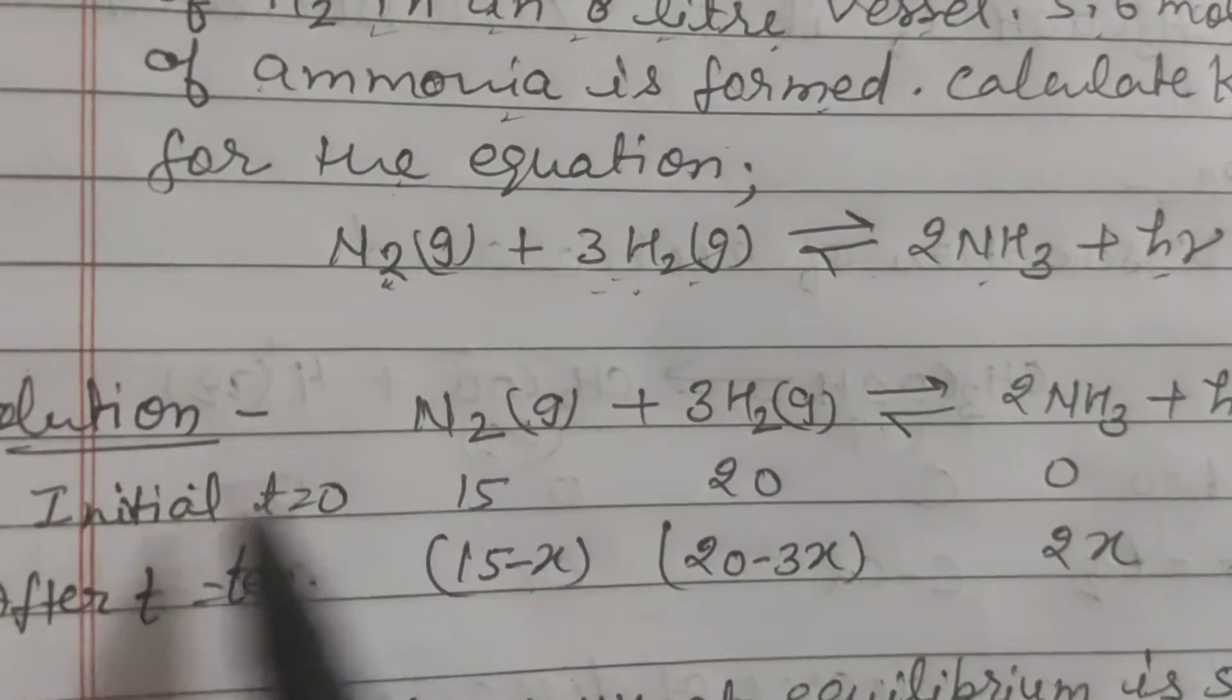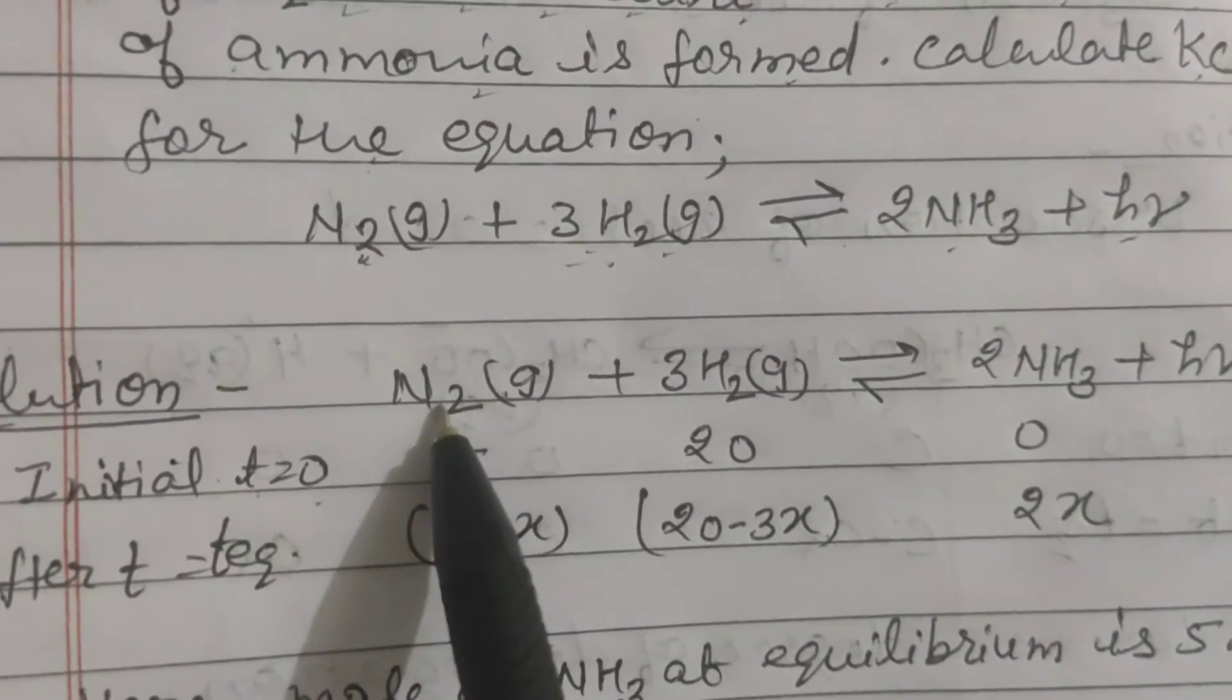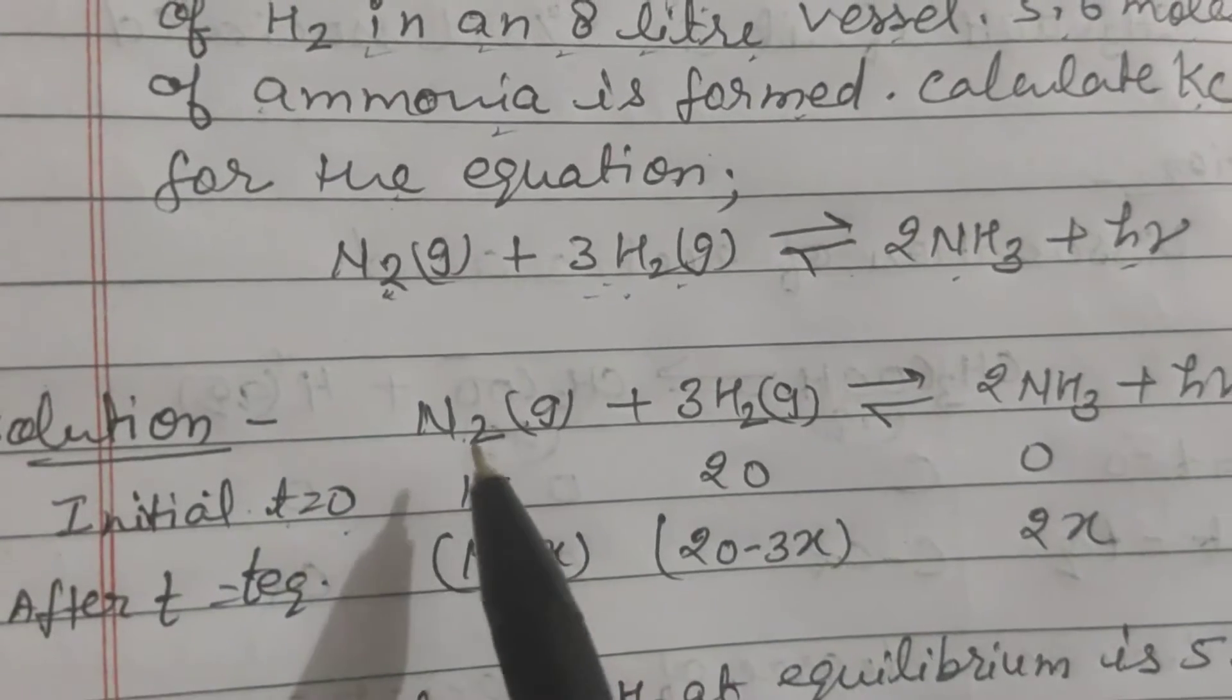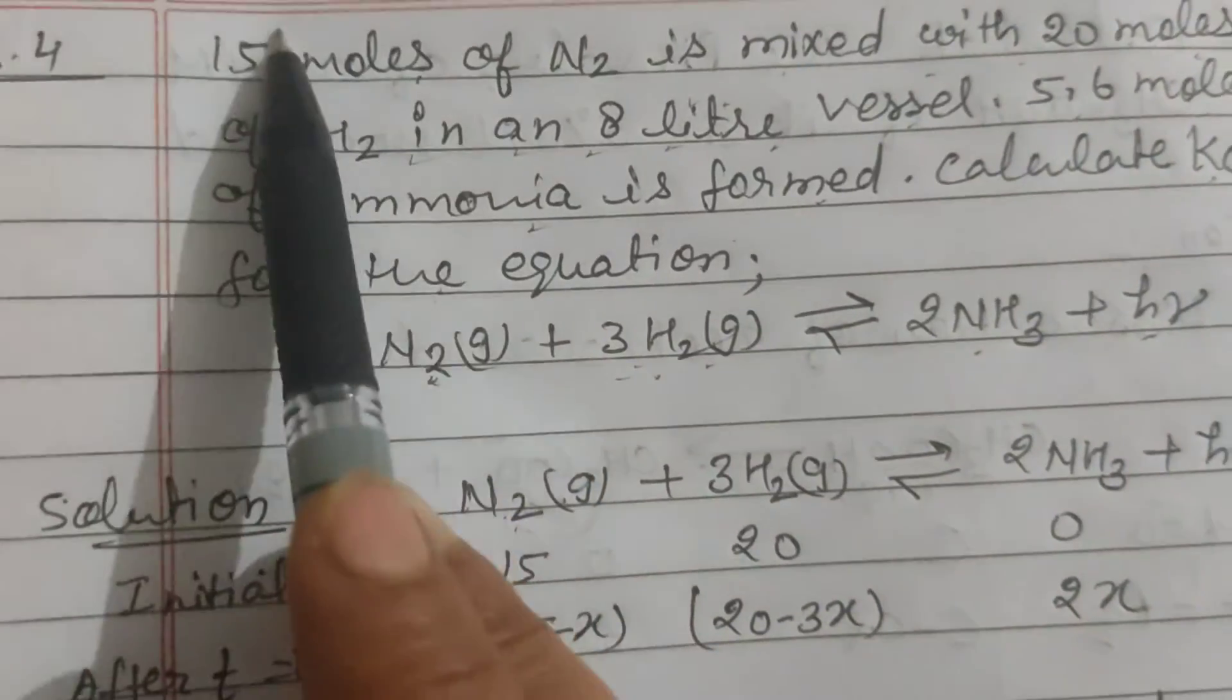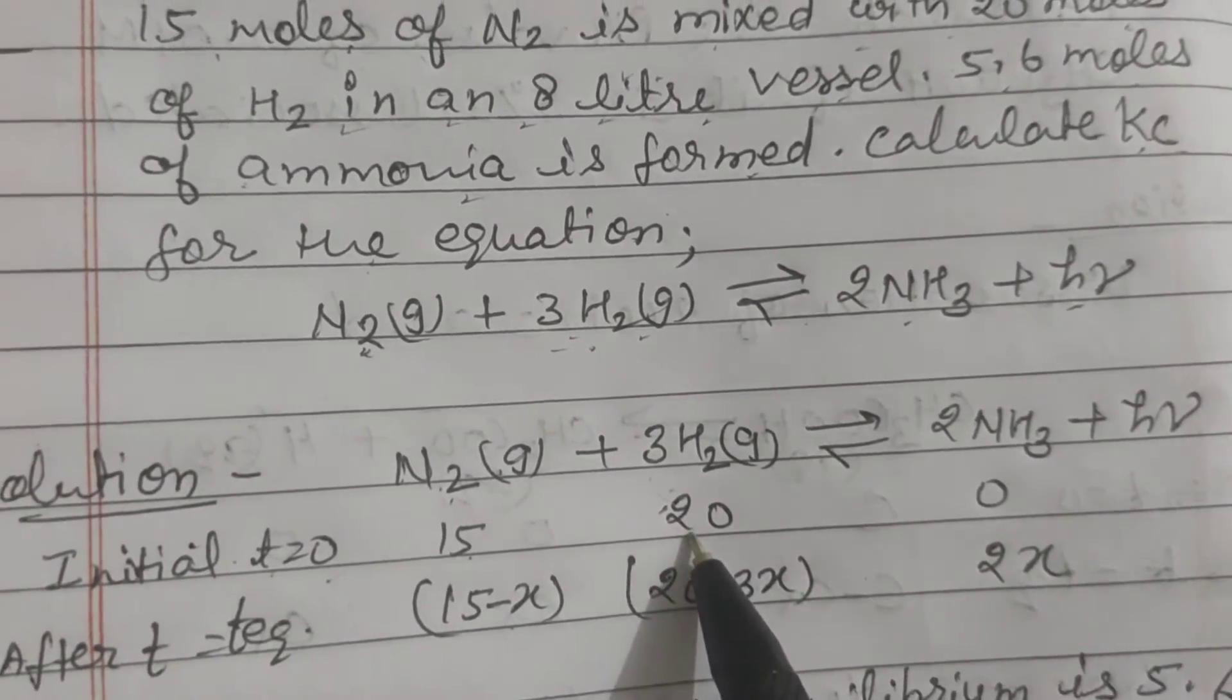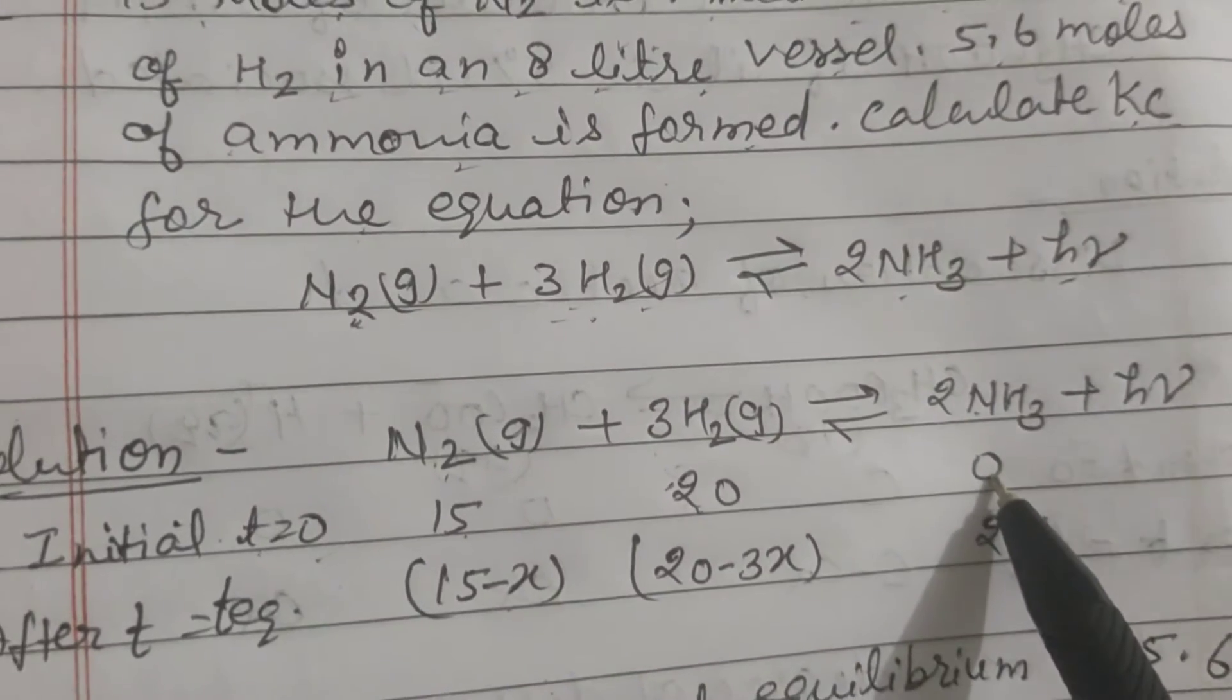This is the equation. Initially, when the reaction has not started, the concentration means amount of nitrogen was 15 moles, and hydrogen has 20 moles, and there is no ammonia formed. That's why there is 0.